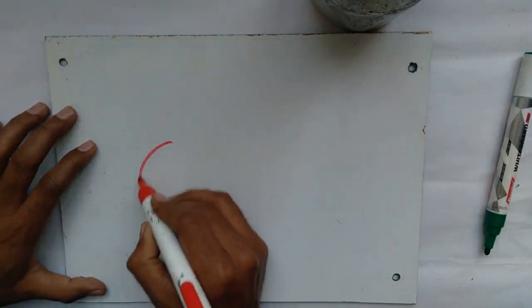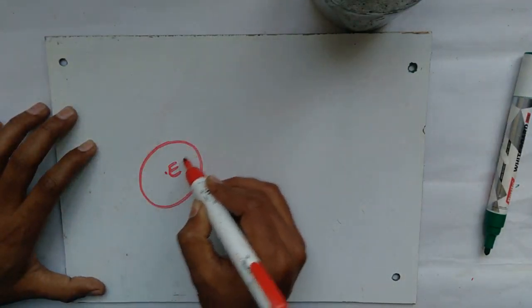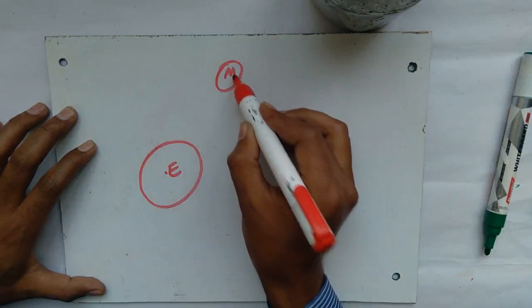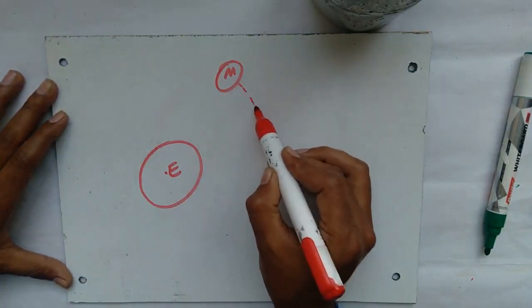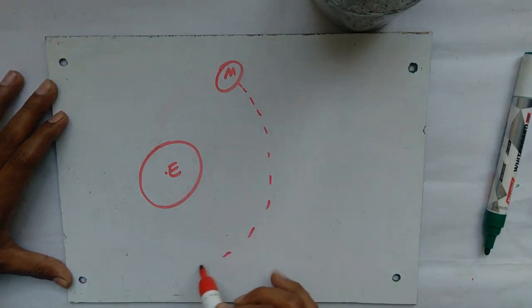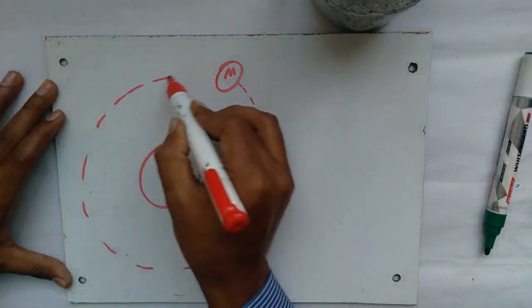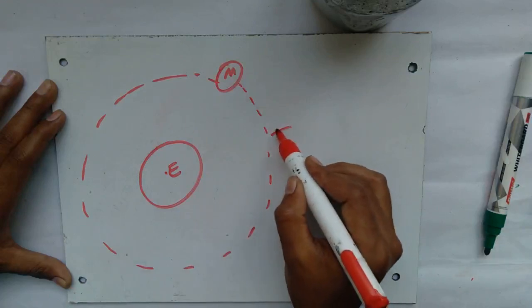Likewise, the moon is so far away from the earth, and moves so fast, that it revolves around the earth, in a circular path, known as orbit.